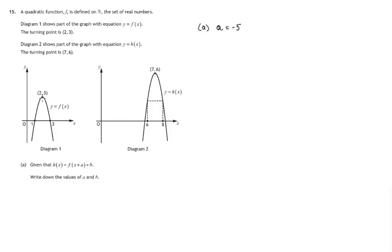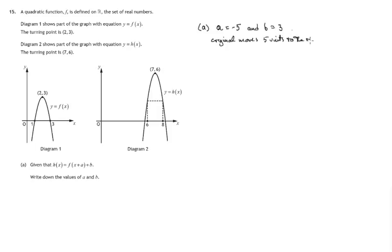This point also moves up 3 units, therefore b is positive 3. So the original graph moves 5 units to the right and up 3 units.